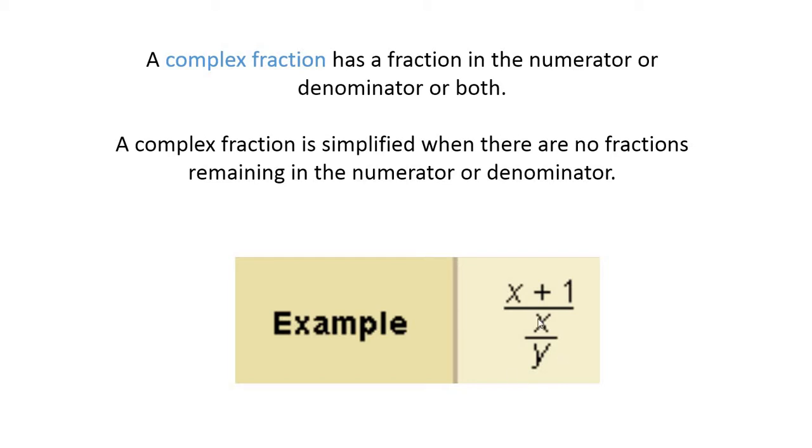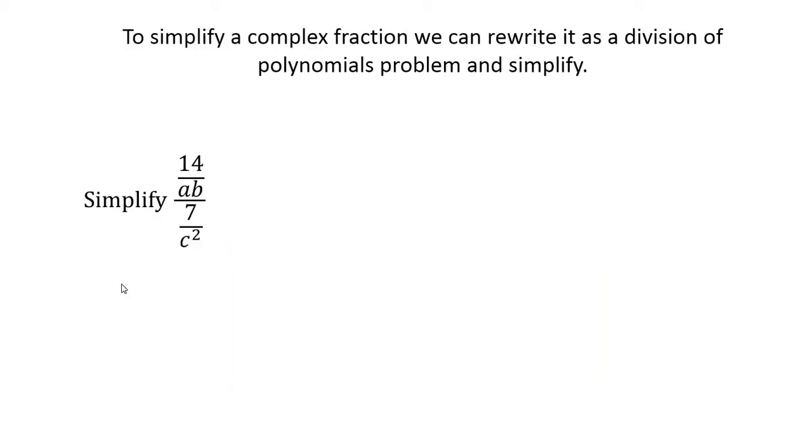In our denominator we have a fraction. A complex fraction is simplified when there are no fractions remaining in the numerator or denominator. You've simplified it down to one simple fraction with a numerator and denominator. Let's look at how to do that.